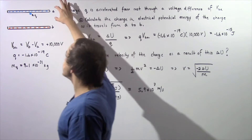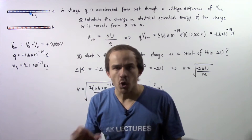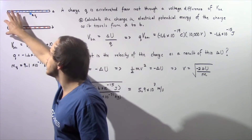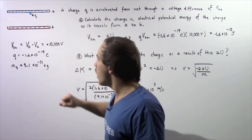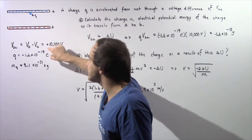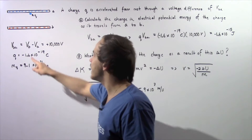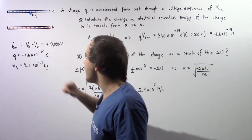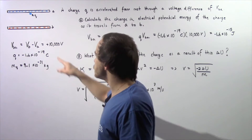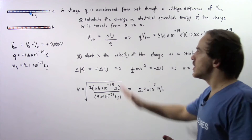By definition, this negative plate will always have a lower voltage than this positive plate, and that's exactly why VBA is given by a positive number — because VB is higher than VA. So our voltage difference is positive 10,000 volts.